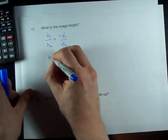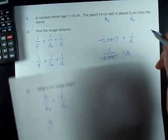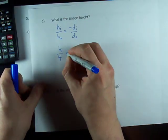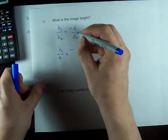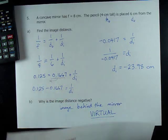We don't know the height of the image. That's what they're asking for. We do know the height of the object. It's 4 centimeters. We've got a negative here. D_i. D_i apparently was negative 23.98.